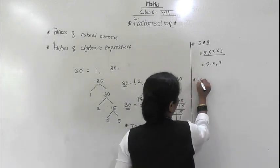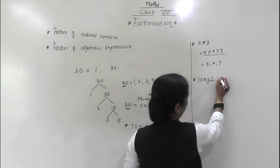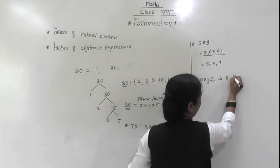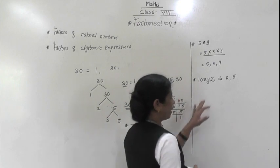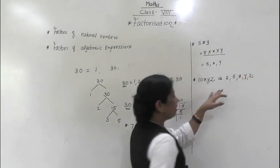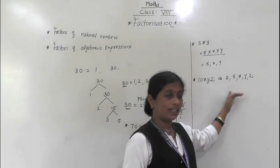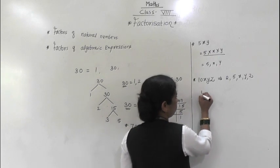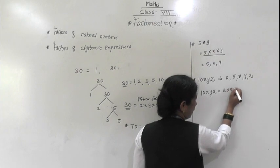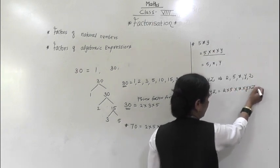Next example: 10xyz. What are the factors of 10xyz? First, factors of 10 are 2 and 5. Then x, y, and z. These are the factors of 10xyz. So we can express it in product form: 10xyz = 2 × 5 × x × y × z. Understood everyone?